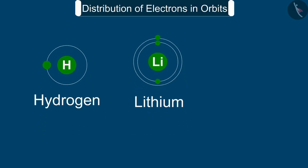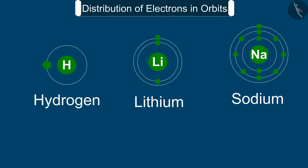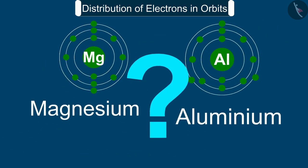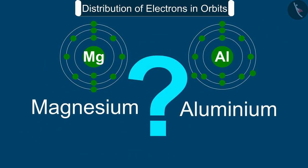Hydrogen, lithium, and sodium atoms contain one electron each in their outermost shell. Therefore each one of them can lose one electron, so they are said to have a valency of one.